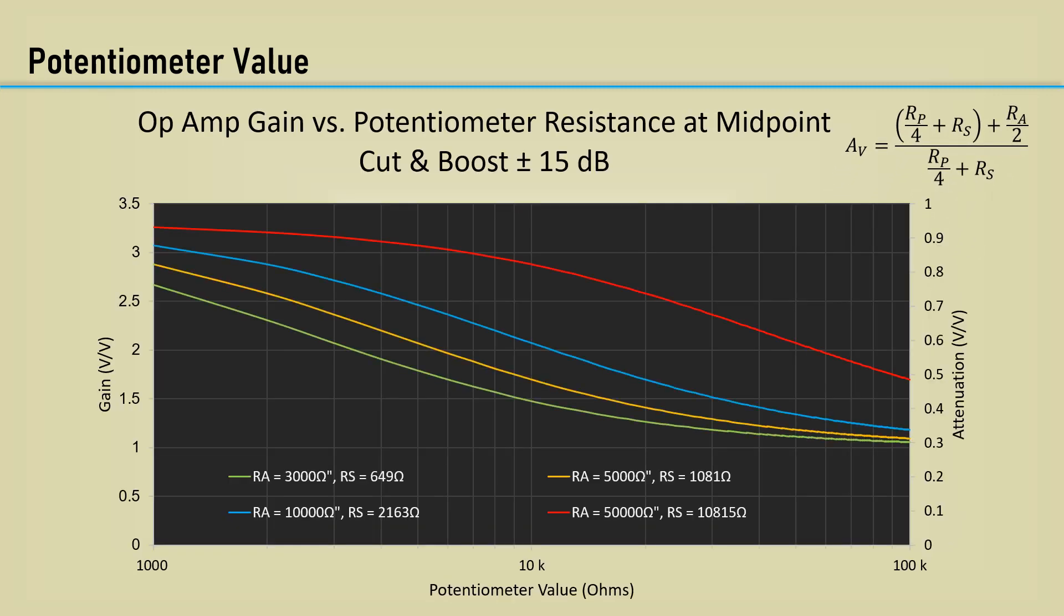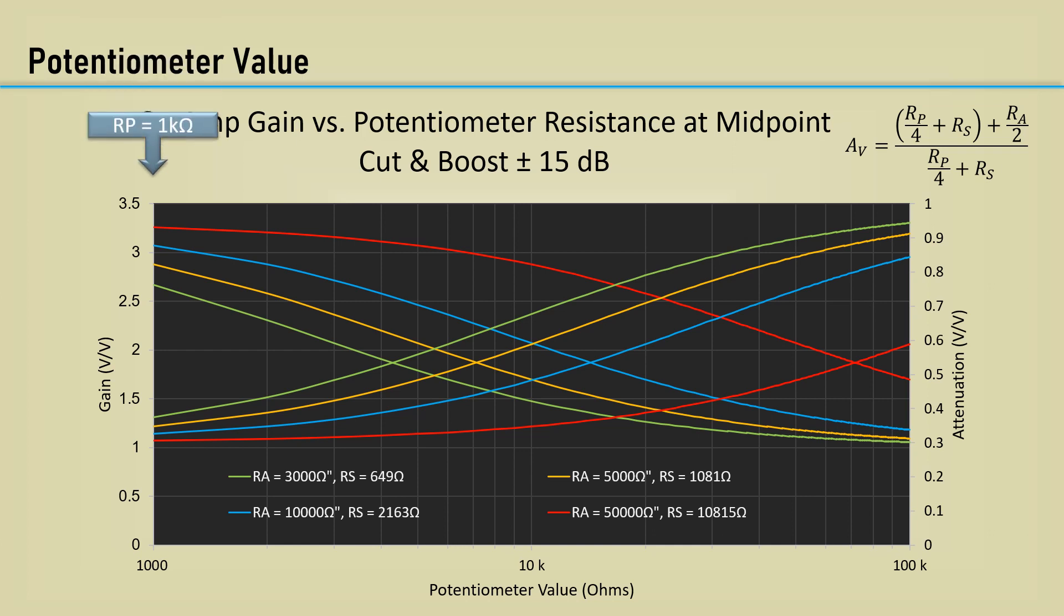I've plotted the op-amp gain in volts per volt versus the potentiometer resistance for various feedback resistor values from 3,000 to 50,000 ohms. This is a plus or minus 15 dB design, so the various RS values are calculated for each RA value shown in the legend. The secondary right side vertical axis is attenuation, which is simply the reciprocal of gain. For a potentiometer value of 1K and an RA of 50K shown in the red plot, the gain is 3.26 volts per volt, which is just over 10 dB, and the corresponding attenuation is 0.307 volts per volt. It's less than optimum to boost the signal that much and then just attenuate it back down.